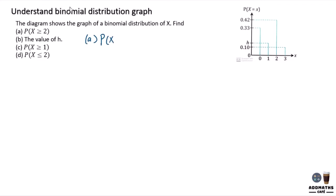we are required to find P(X ≥ 2), which means to happen two times and three times. So in this case, two times will be 0.42 plus three times, which is 0.1. And at the end of the result, this will be your answer, 0.52.